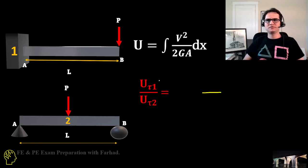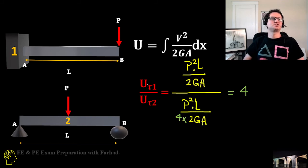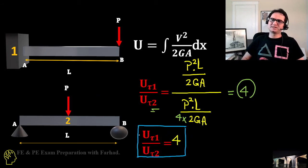If you divide the two shear strains over each other, U1 is four times bigger than U2. That gives us strain energy in beam one due to shear is four times greater than strain energy in beam two.